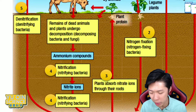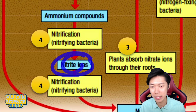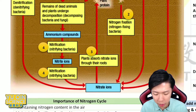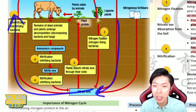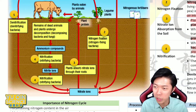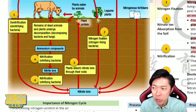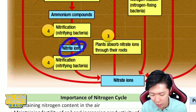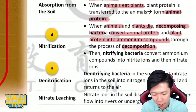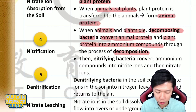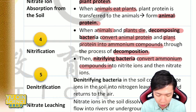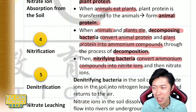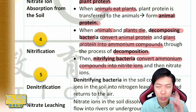Decomposing bacteria convert animal protein and plant protein into ammonium compound through a process called decomposition. Then, ammonium compound will be converted into nitrate, and then converted one more time to nitrate — because you come in as nitrate and you leave the soil in the same form. This process is called nitrification, carried out by nitrifying bacteria.